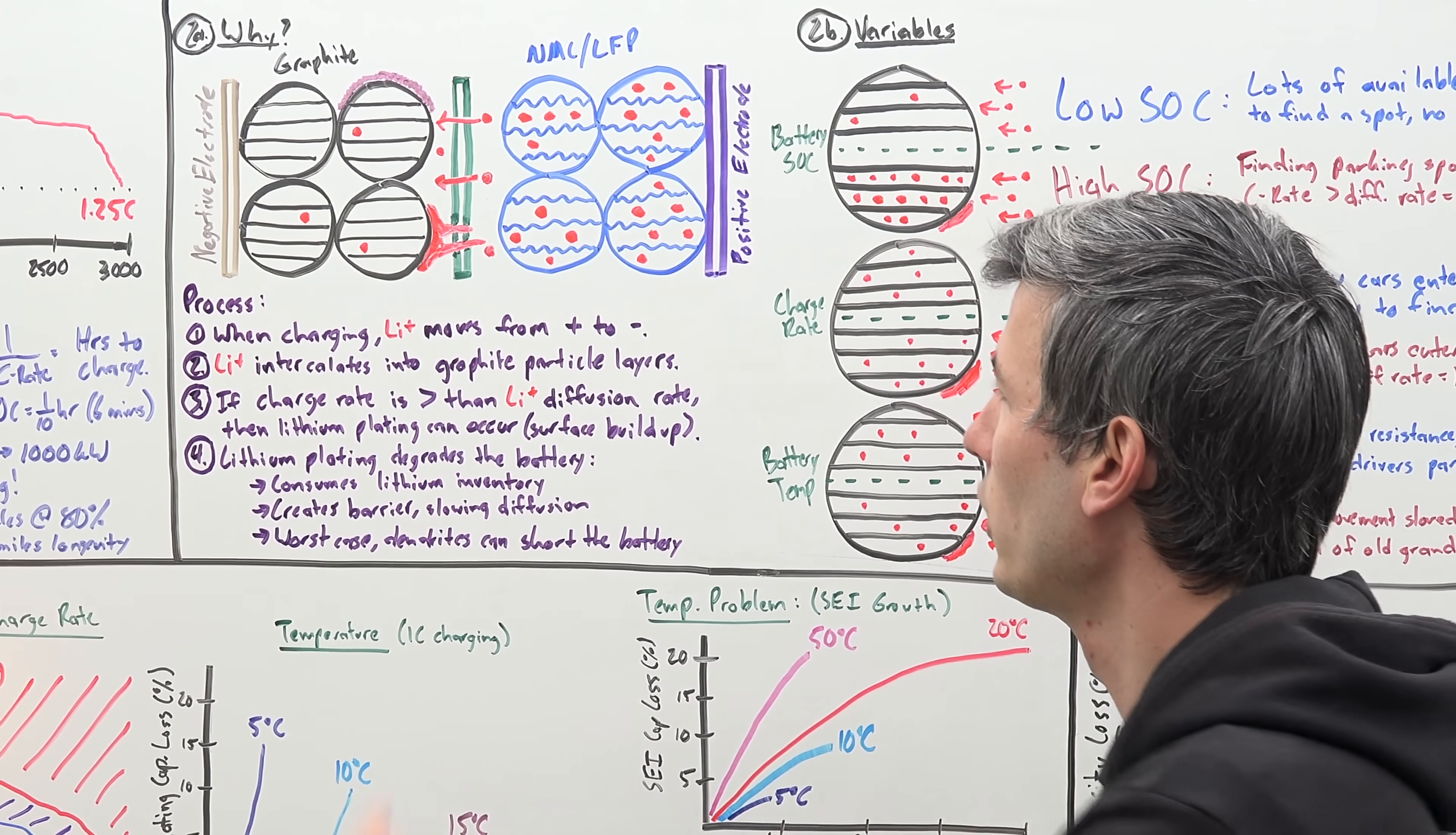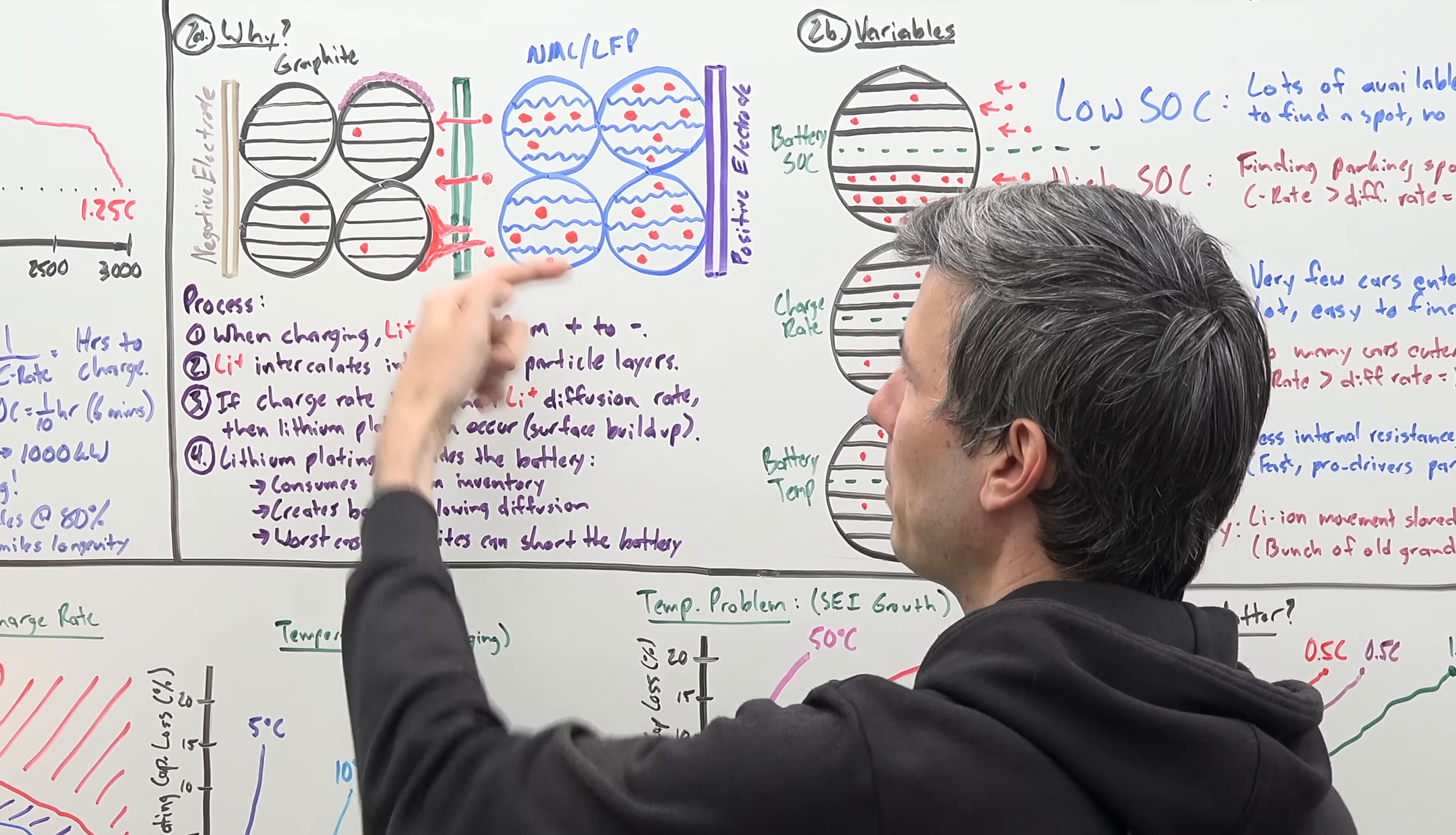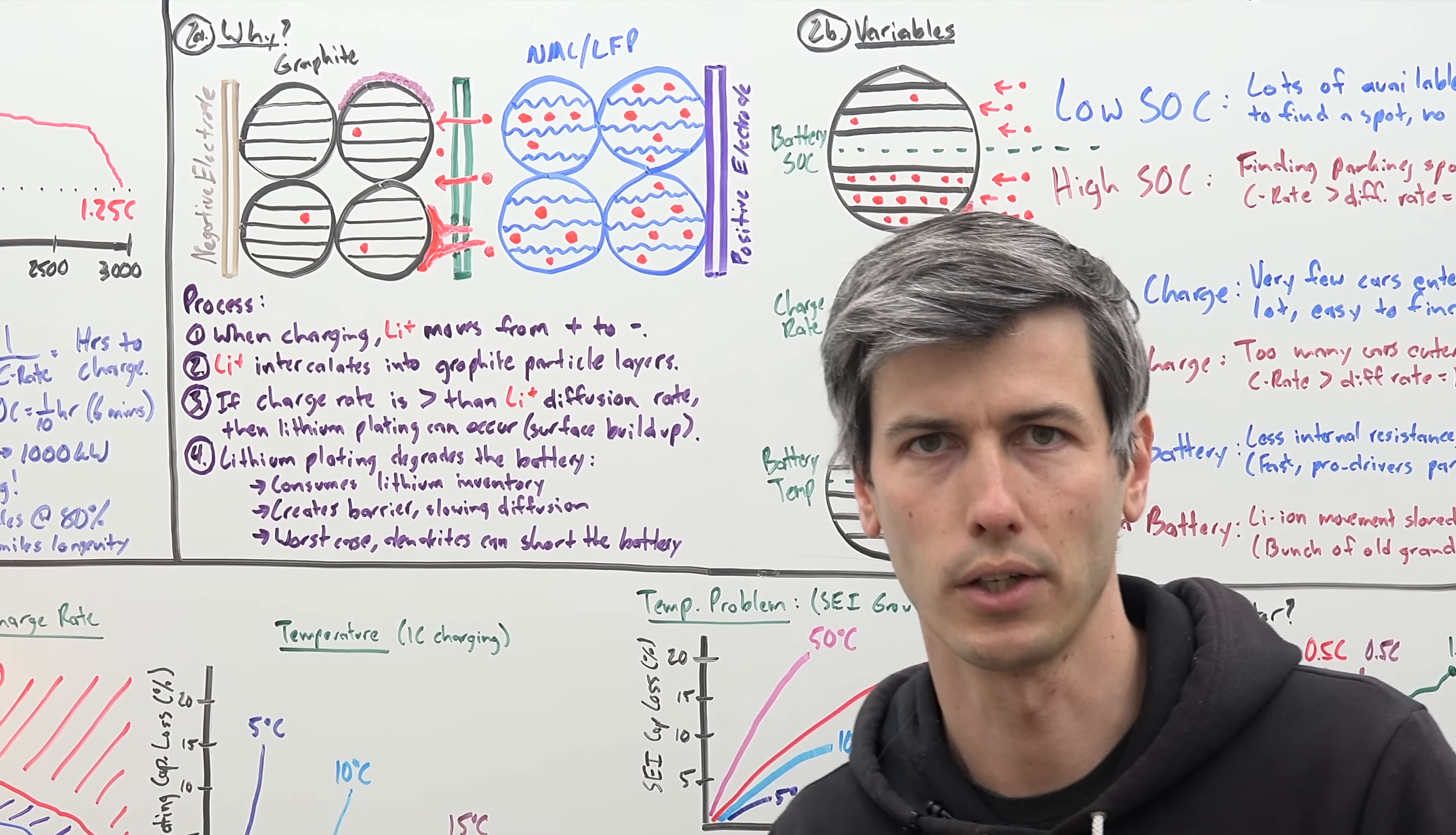And finally, worst case, you can have these dendrites form, where that lithium metal starts to create these little spikes, eventually that might pierce your separator, you're then connecting your negative to your positive, and suddenly you've got a short, and you can have a thermal runaway situation.